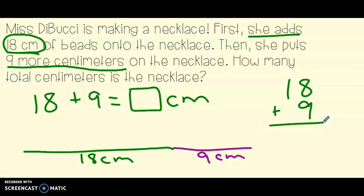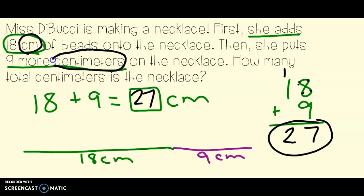Now, I wrote my equation from side to side. You might want to change it to write it up and down. That's all right, too. Let's go ahead and add up 18 plus 9. I'm going to use touch points. 9, 10, 11, 12, 13, 14, 15, 16, 17. I made a new 10, and 1 plus 1 is 2. So that means my necklace is 27 centimeters long.